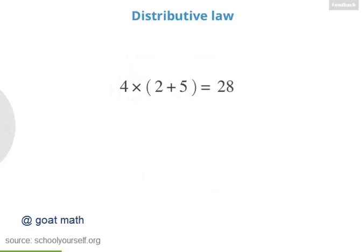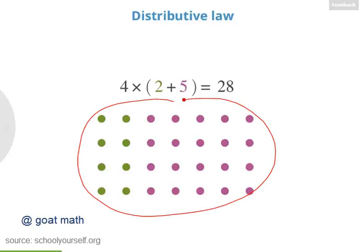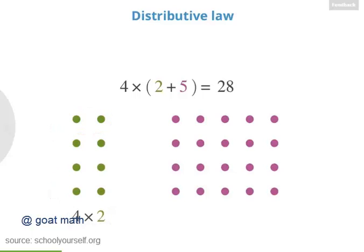Let's look at this expression using dots. First, you added 2 and 5, so here are 2 green dots and 5 purple dots. Then you multiplied by 4, meaning you have 4 groups of these dots. So the total number of dots is 4 times 7, or 28. Now let's look at the green and purple dots separately. Here we have 4 groups each with 2 green dots, so we have 4 times 2 green dots. And over here, we have 4 groups each with 5 purple dots, so we have 4 times 5 purple dots.